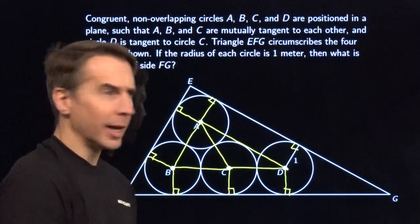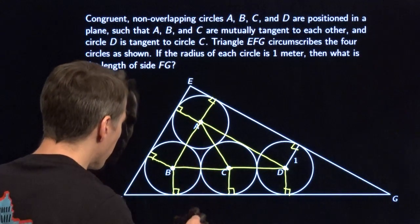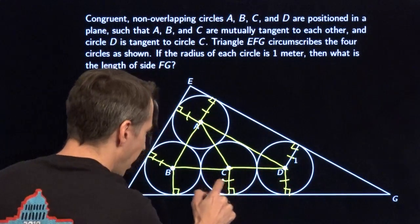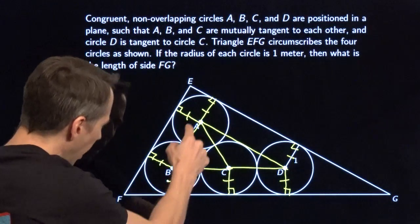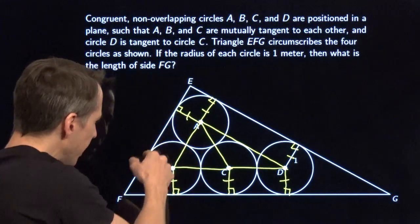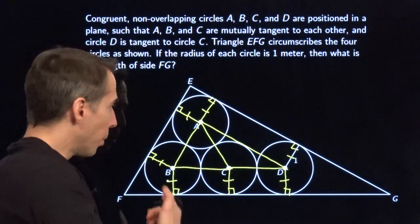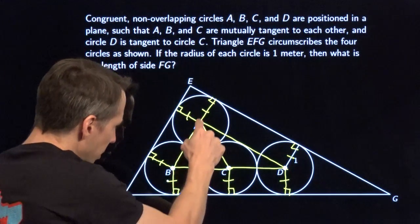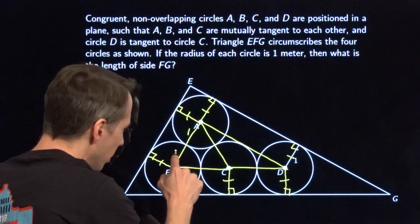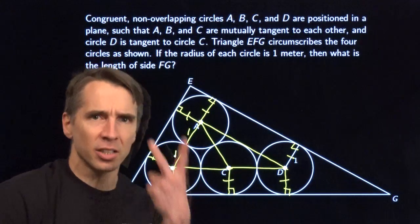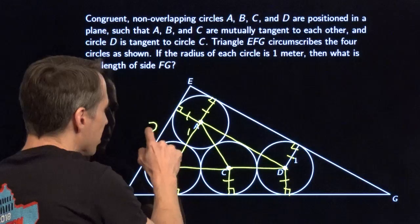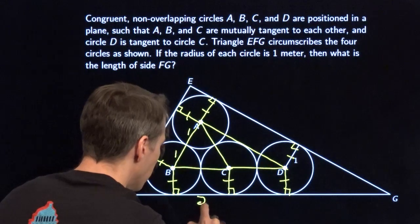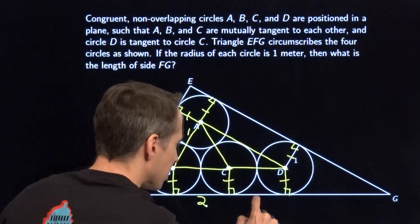Now what do we have? We've got a bunch of radii here. Let me go ahead and mark those — radius, radius, radius, radius, radius. These all have length one. I look right here and I've got right angles right there and right there, and these two sides are both length one. This is a rectangle. And this piece right there is a radius with length one. This has length one, so AB has length two. That means this piece over here has length two as well. This has length two, and down here, this has length two as well.